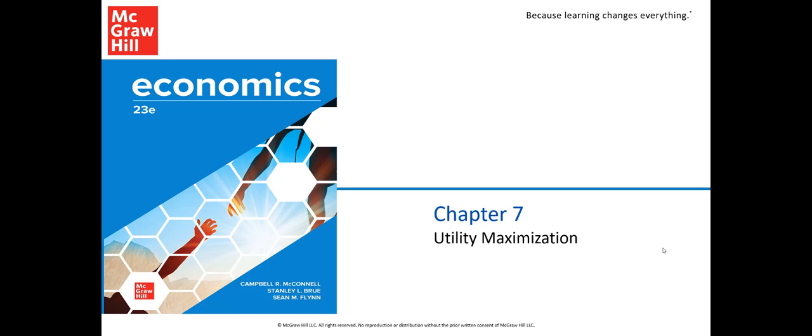Hi everyone. Today we will be learning about utility maximization — how people make choices to get the most satisfaction from what they buy. We will talk about things like the law of diminishing marginal utility, how people decide what to buy, how demand curves are created, and how price changes affect what people buy.